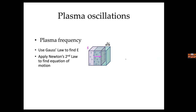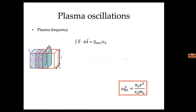We use two equations: Gauss's law to find the electric field, and Newton's second law to find the motion of particles subject to that field. In Gauss's law, the electric field crossing some area element equals the enclosed charge due to the disturbance. We have geometric parameters L, z, and δx, and the charge is the charge density times the enclosed volume. With this we calculate the electric field in terms of density and δx, the size of the disturbance.